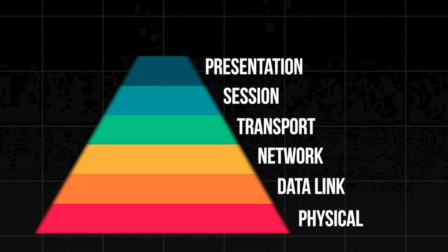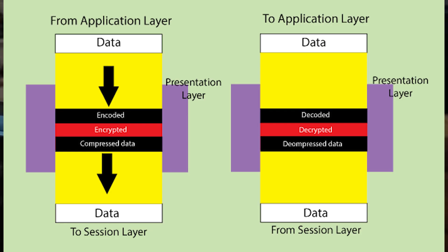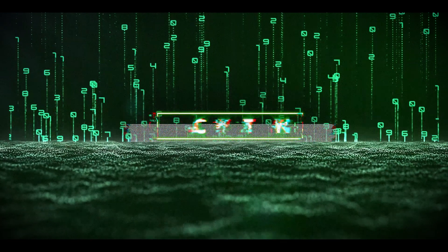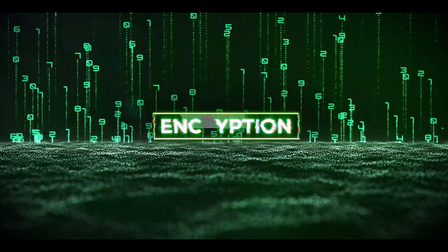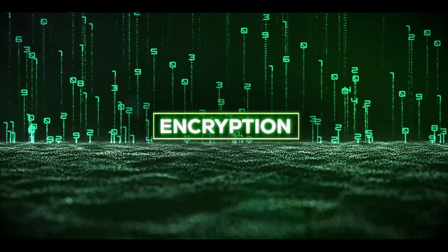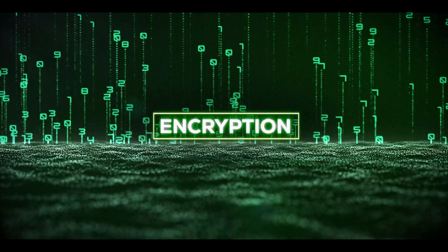The presentation layer is the translator and stylist. It formats data so that receiving devices can understand it — think of converting text to a web page or encrypting your online banking with HTTPS. It's the layer that makes sure data looks good and stays secure before handing it to the top layer.